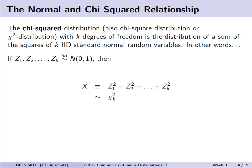In other words, if we assume that we have standard normal random variables z1 up to zk, then if we define a random variable to be the sum of each one of these separate independent and identically distributed random variables z1 through zk all squared, this will be distributed as a chi-squared distribution with those k degrees of freedom.